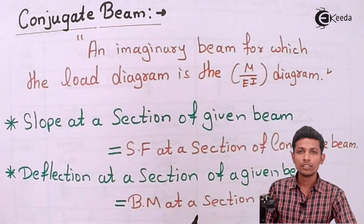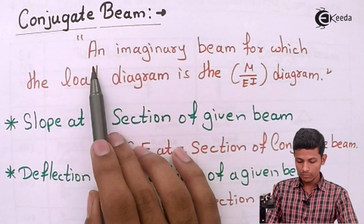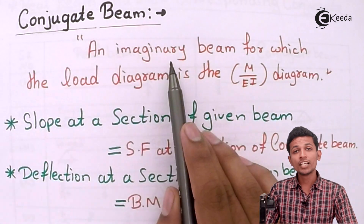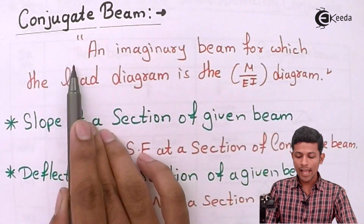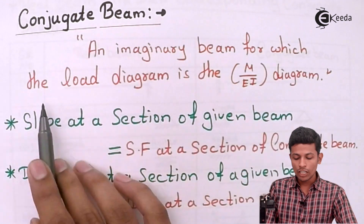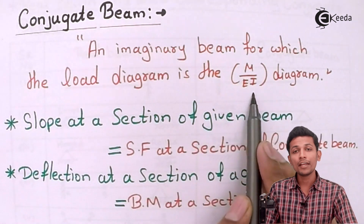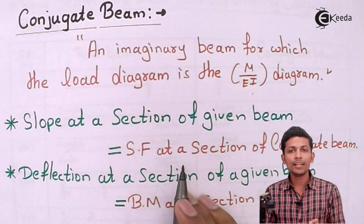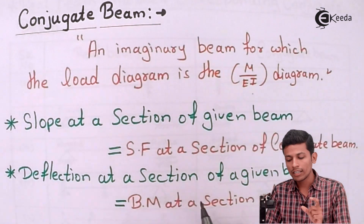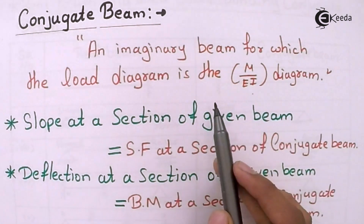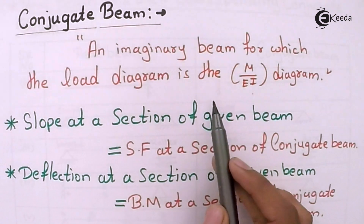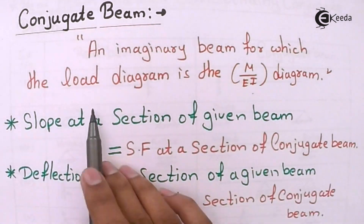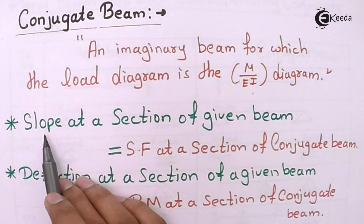What is the definition of a conjugate beam? The conjugate beam is nothing but an imaginary beam for which the load diagram is the M/EI diagram. You have to remember only this part: the load diagram is the M/EI diagram. I will explain this further in the solved problems.